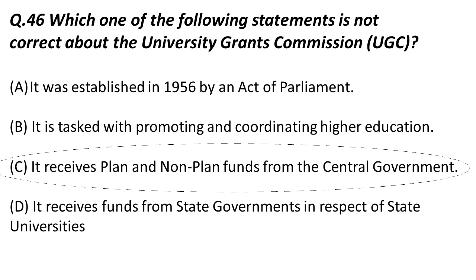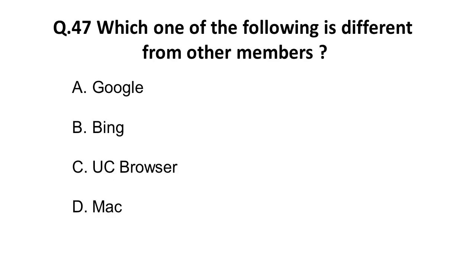Next question: which one of the following is different from the other members? Options are Google, Bing, UC Browser, and Mac. Google, Bing, and UC Browser are search engines, while Mac is an operating system. The odd one out is Mac.